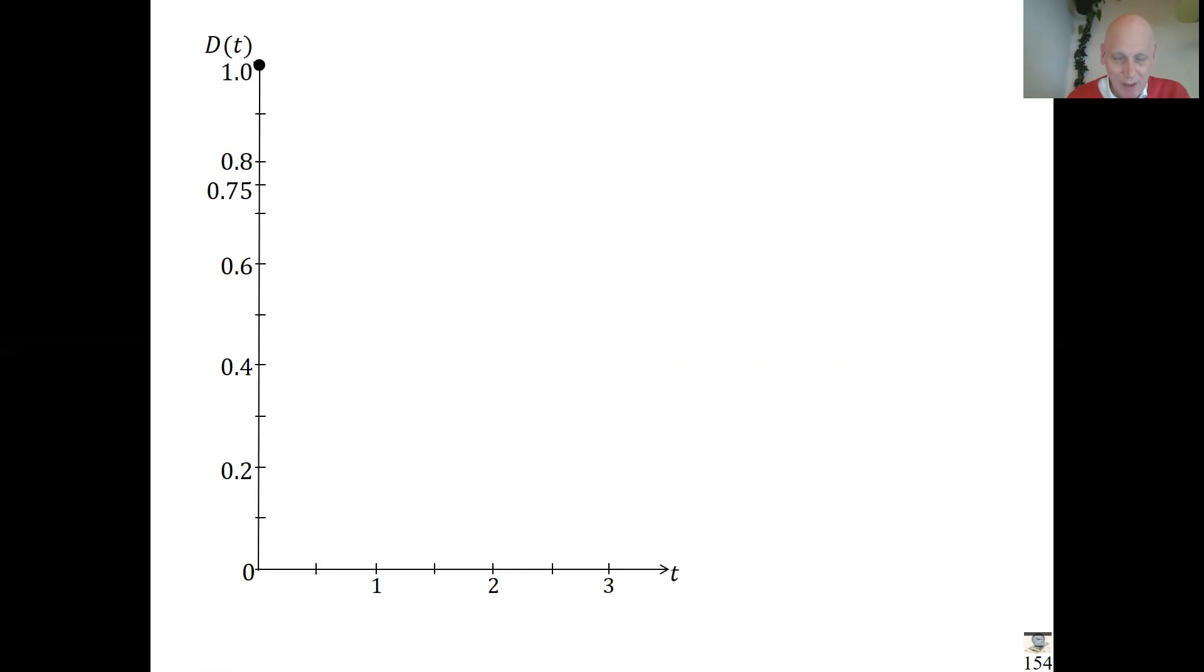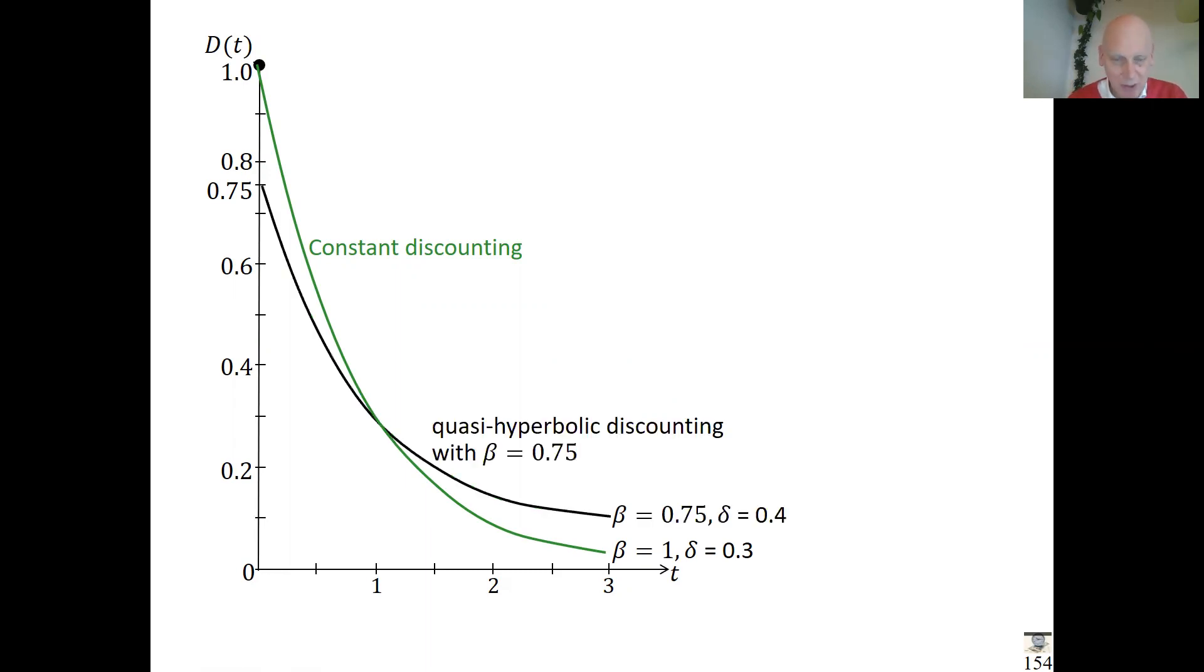Some graphs to illustrate. Here's again the constant discount function, and I'm going to normalize in such a way that at time point t=1 they have the same impatience. Then you see for quasi-hyperbolic, from the present, any time point later than the present is immediately punished a lot. Big jump here—it's very strongly, infinitely strongly decreasing, immediately goes down to 0.75.